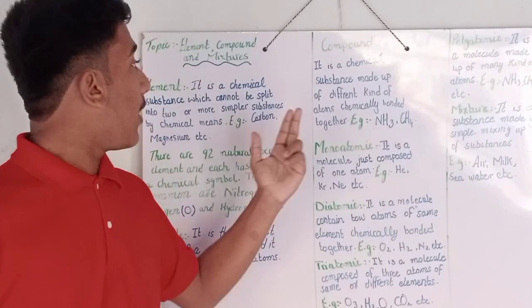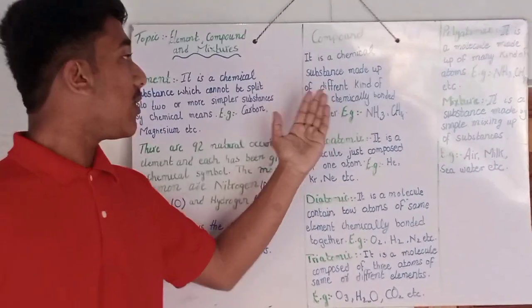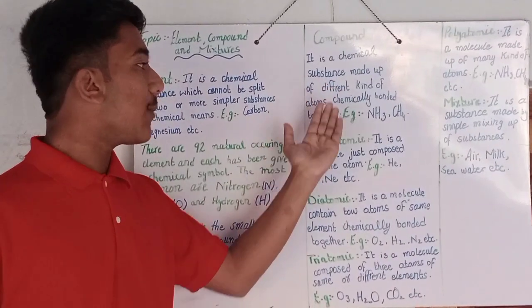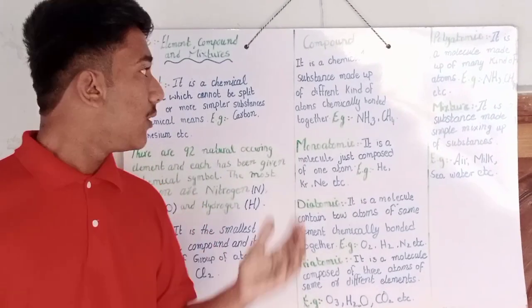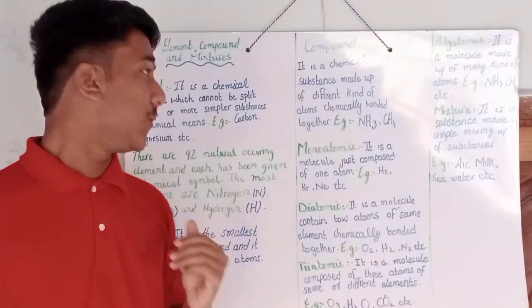Compound. Compound, it is a chemical substance made up of different kinds of atoms chemically bonded together. For example, H2O and CH4.